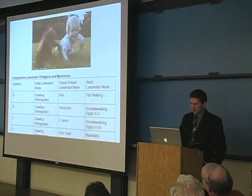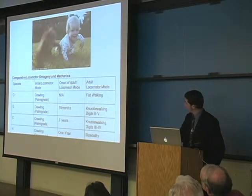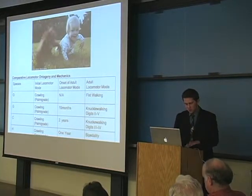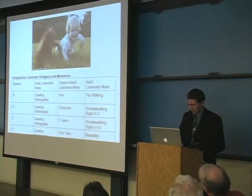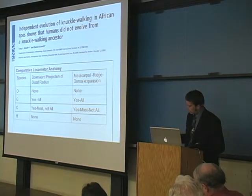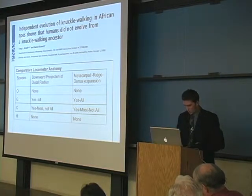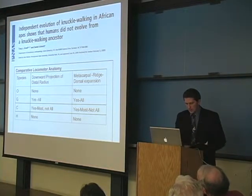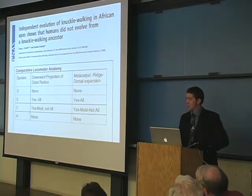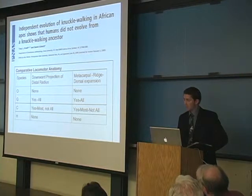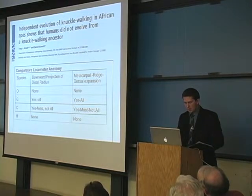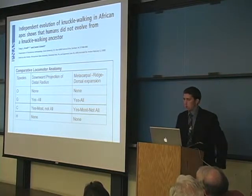There is accumulating evidence that knuckle walking did in fact evolve in parallel in chimps and gorillas, such as differences in locomotor ontogeny and mechanics between gorillas and chimps, and differences in the incidence of traits strictly associated with knuckle walking — namely the orientation of the distal radius and the metacarpal dorsal ridges. These features have been driven to fixation in gorillas, but not in chimps, a fact that makes sense if knuckle walking arose slightly later in chimps after the GCH and CH split.